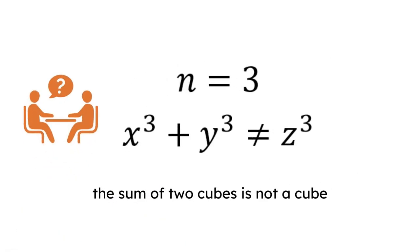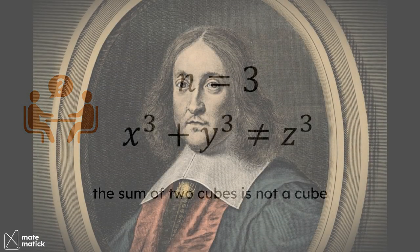The theorem was particularly baffling because it seemed simple, yet resisted all efforts at proof. Many mathematicians tried and failed to confirm Fermat's assertion.